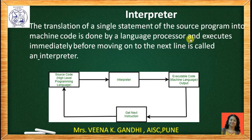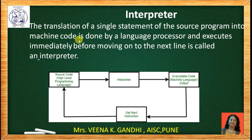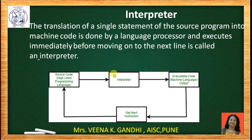Next is the interpreter. The interpreter reads a single statement of the source program and directly converts it into machine code and executes it. It does not accept the whole program at once; it translates the program line by line. As you can see in the figure, the interpreter reads a single instruction from the source program, converts it into machine code, and executes it directly. Then it reads the next instruction from the source code, converts it into machine code, and executes it directly.